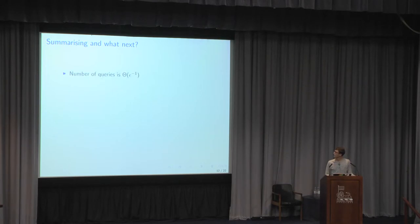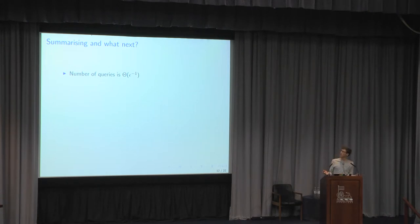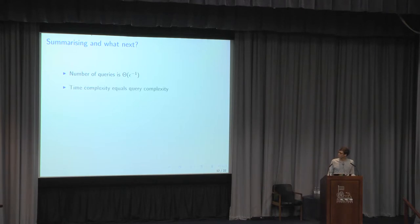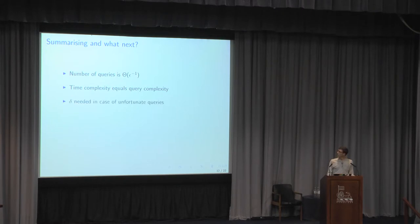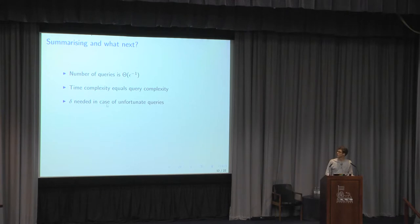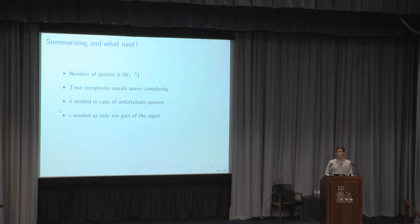Looking at the entirety of the algorithm: the number of queries is linear in 1/epsilon, because it only depends on the size of the fixed string S (which is constant) and 1/epsilon. This is O(1) in the input size — it doesn't matter whether the input is 2 gigabytes or 100 megabytes long; we run in the same amount of time, provided it fits in memory. Querying the input takes O(1) time, so time complexity equals query complexity. We actually need both delta and epsilon: delta accounts for the case where we have very unfortunate queries and miss the relevant instances, while epsilon accounts for the fact that we don't see the entirety of the input and can't verify S is absent everywhere we haven't looked.